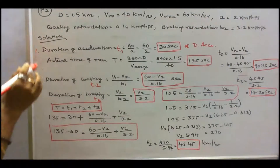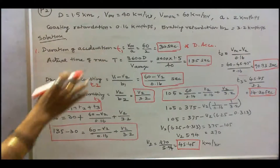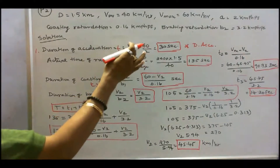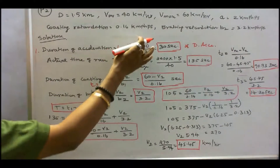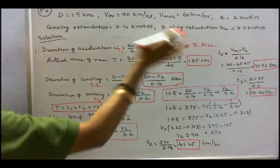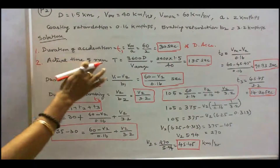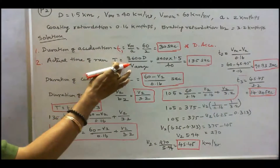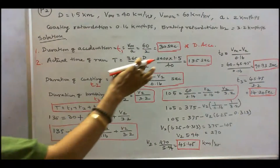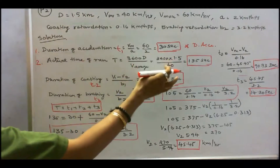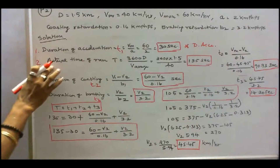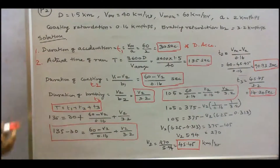Duration of acceleration T1 = Vm / a = 60 / 2 = 30 seconds. Actual time of run T = 3600 × D / V_average = 3600 × 1.5 / 40 = 135 seconds. And T = T1 + T2 + T3.